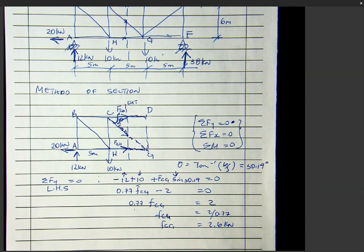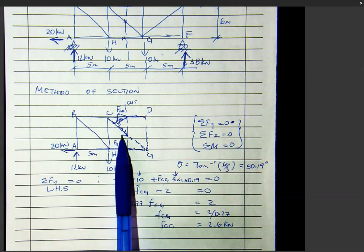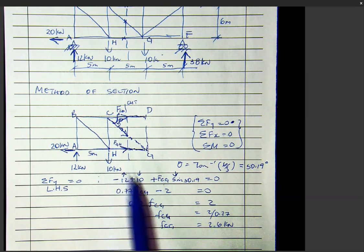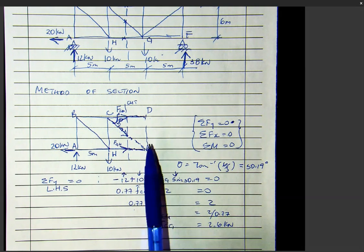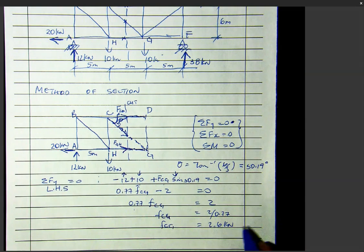The question is: is this force in tension or compression? I assumed the force is in tension, and I am getting a positive answer. That means my assumption is correct. Therefore, FCG is indeed in tension — 2.6 kilonewtons in tension.